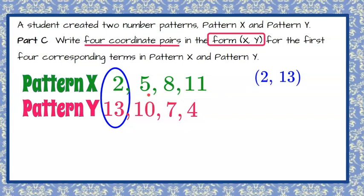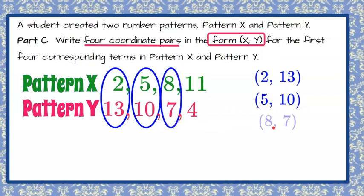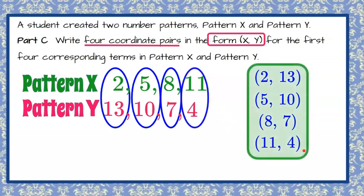The second set of terms, the number 2 term in both patterns. So 5 is the X, 10 for pattern Y, (5, 10) in parentheses. Our third is (8, 7). So X is 8, Y is 7. And our fourth would be (11, 4). So those are your four ordered pairs using the corresponding terms for pattern X and pattern Y.